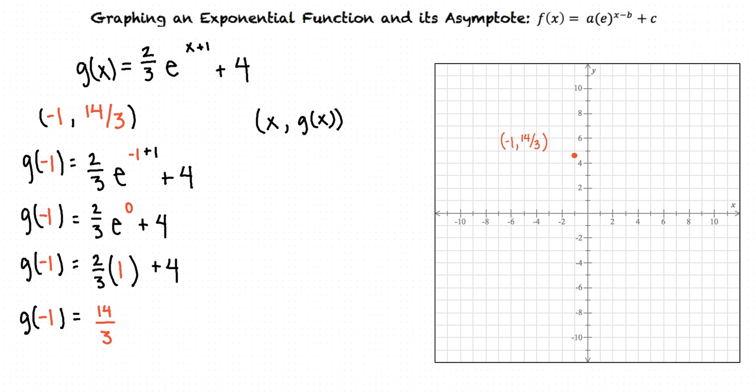To find a second point, we can evaluate g(x) for the next integer after negative one. So now we'll find g(x) when x equals zero. After simplifying, we see that when x equals zero, g(x) equals two-thirds e plus four. This tells us that the point (0, 2/3 e + 4) is another point on the graph.